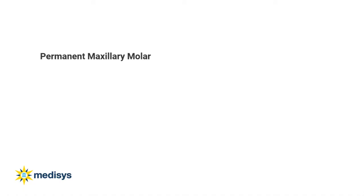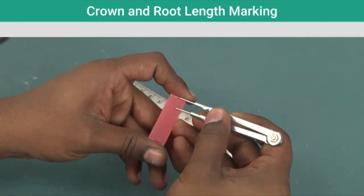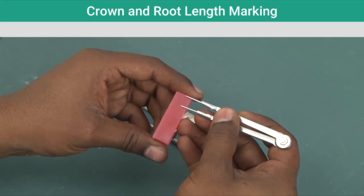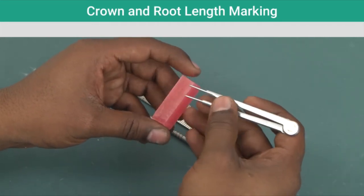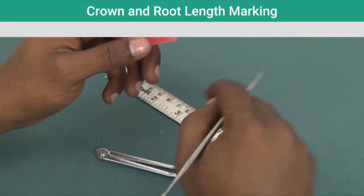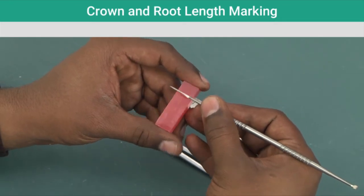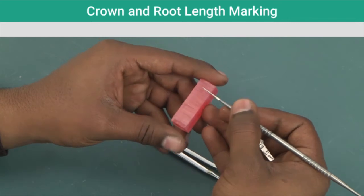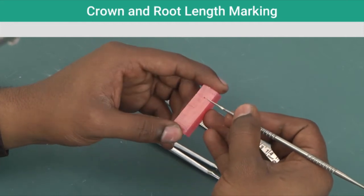This video shows the carving of a permanent maxillary molar — a systematic and easy way to perform the required carving skill, which supports the students' practice at their homes and at their convenience. We mark 7.5 mm on the wax block, then divide the crown into 3 equal thirds horizontally and into 2 equal halves vertically as shown. It is recommended to have an extra 0.5 mm measurement for later adjustments.